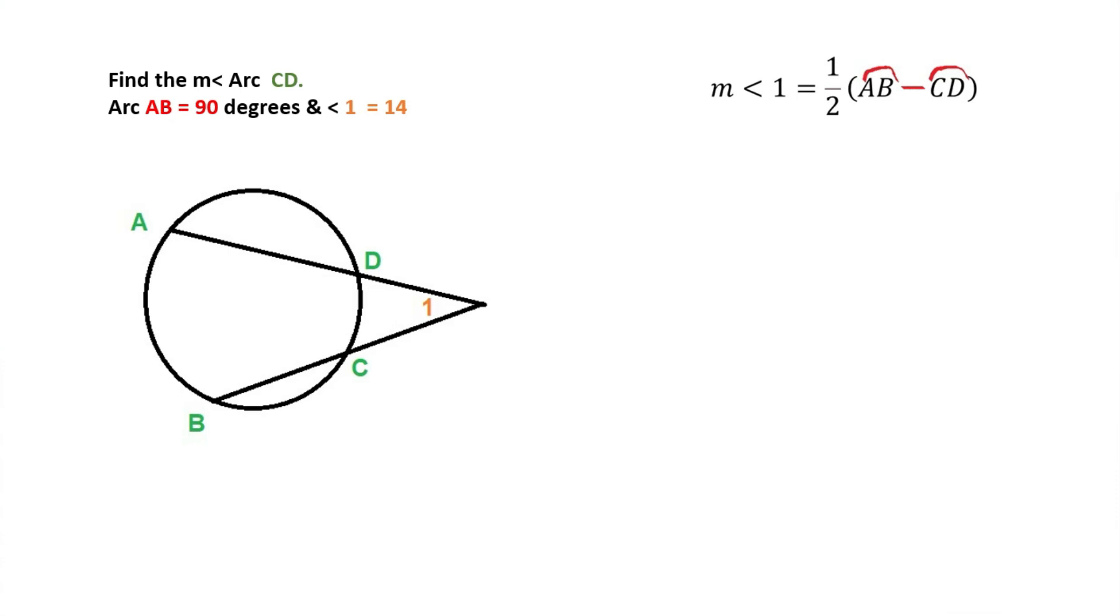Here they want us to find the arc CD. So we know the measure of the outside angle. Let's go ahead and fill in the information. So the measure of angle one is equal to 14. We will put one-half, our large arc is what they give us AB, so that's equal to 90 minus arc CD, which is what we're trying to find.